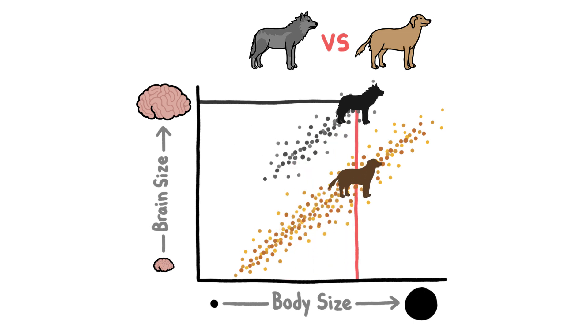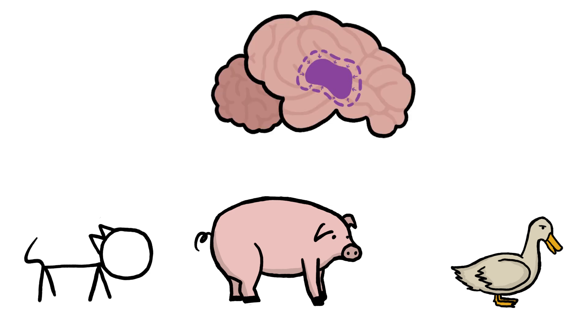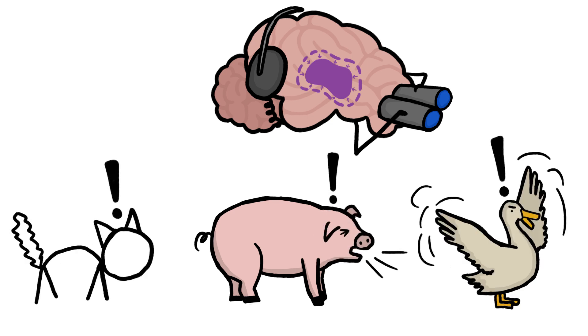no matter what that body size is. What's more, across different domesticated animals, a disproportionate amount of the shrinkage happened in parts of the brain that monitor information from the outside world and tell animals when and how to freak out.